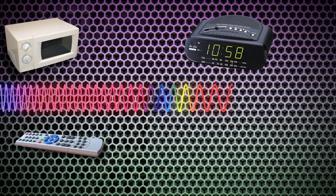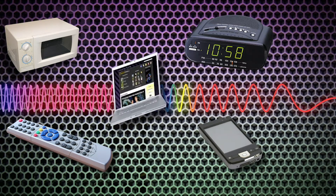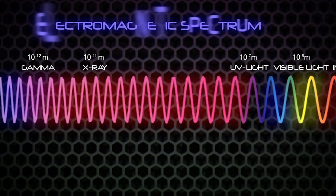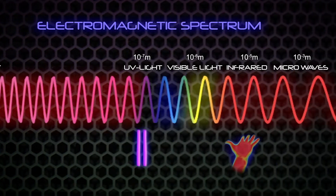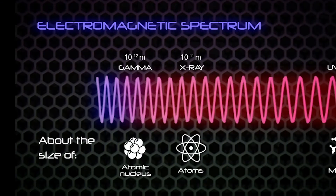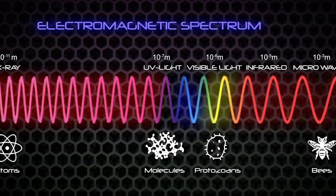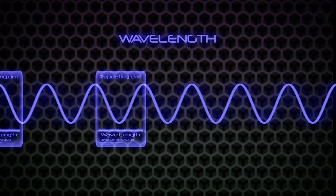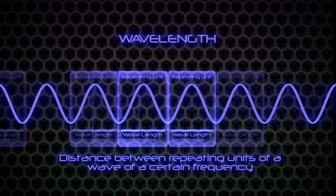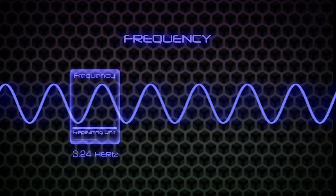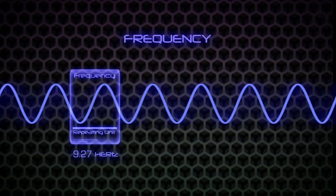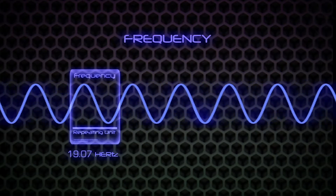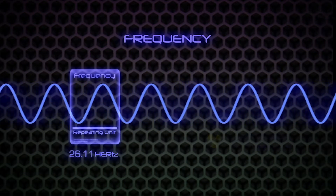Let's recap this. All the devices Rob tried to use this morning normally function using electromagnetic waves of different wavelengths. The electromagnetic spectrum ranges from short gamma and X-rays to long radio waves. Gamma and X-rays have very short wavelengths that are fractions of the size of atoms, but radio waves can be thousands of kilometers long. Wavelength simply means the distance between repeating units of a wave of a certain frequency, and frequency is the number of cycles per unit time. Electromagnetic frequencies range from about a million hertz for gamma rays to only a few hertz for radio waves.